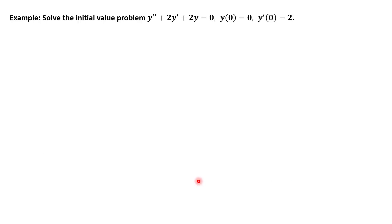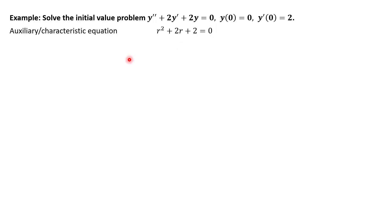Let's try an example. We're going to solve this initial value problem: y'' + 2y' + 2y = 0, with some initial conditions for the zeroth and first derivative. Remember how this goes — we start with our auxiliary or characteristic equation, and the shortcut is just looking at your coefficients. So we get r² + 2r + 2 = 0.